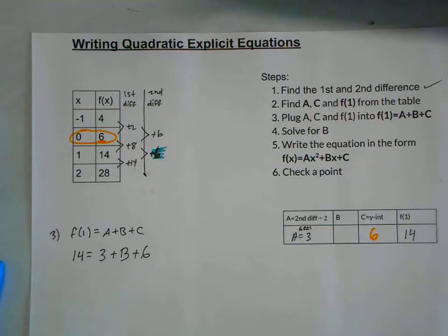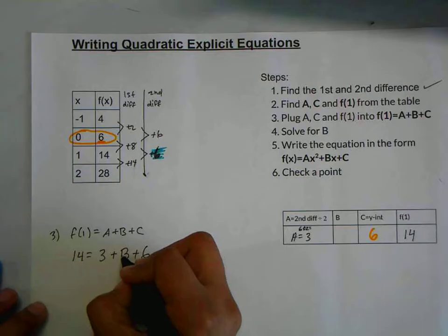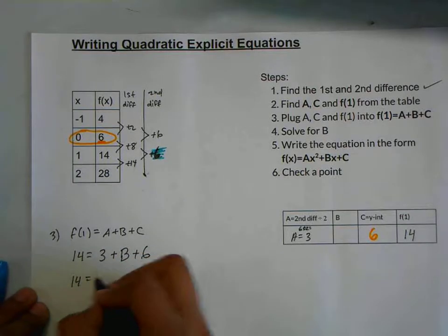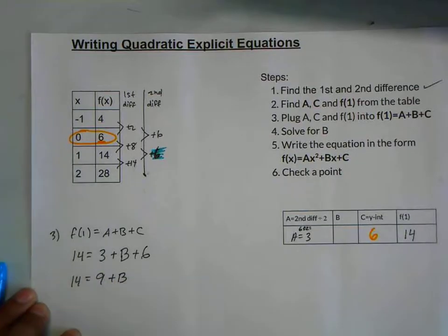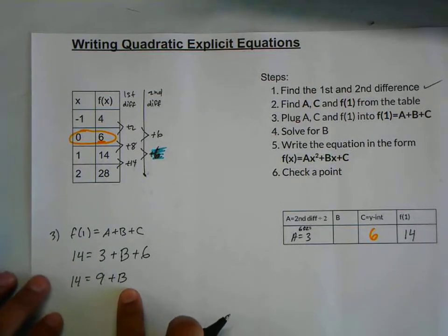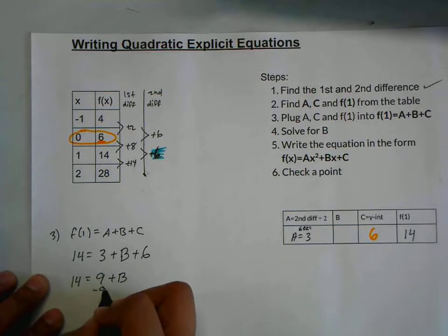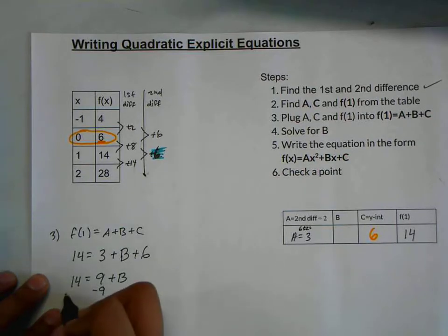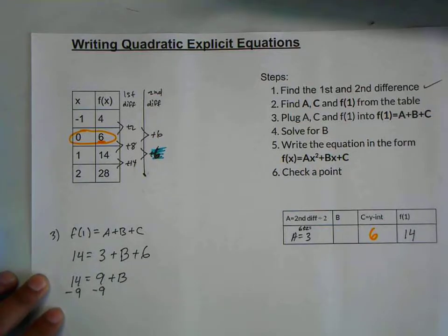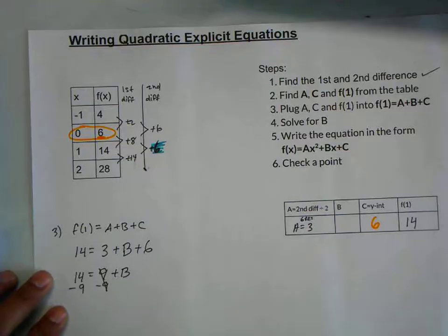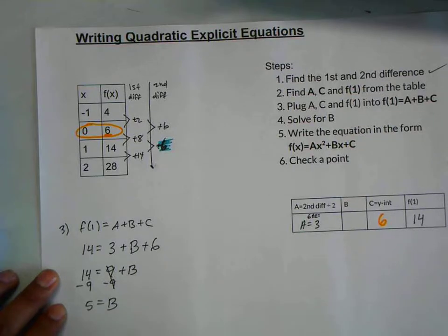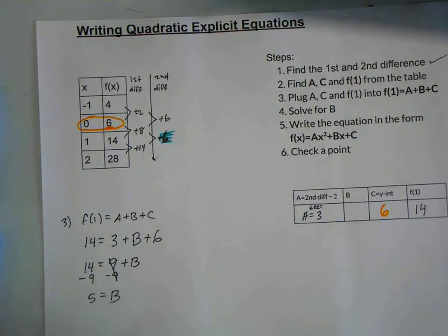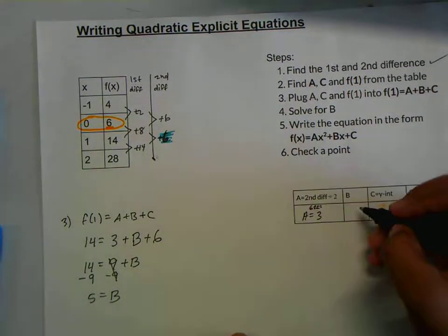Now we just have to solve for b. Hopefully you remember this from math 1. I'm going to go ahead and add these two, giving me 9. Now to solve for b, we need to isolate it. Since we're adding by 9, I'm going to subtract by 9 from both sides, canceling that out, giving me 5 is equal to b. So b is equal to 5.